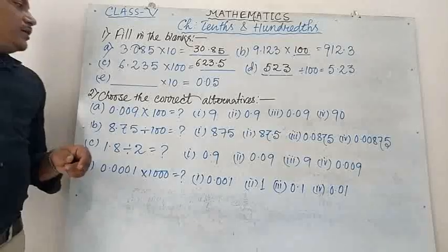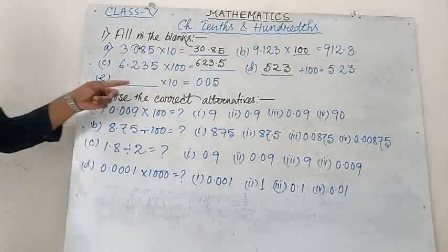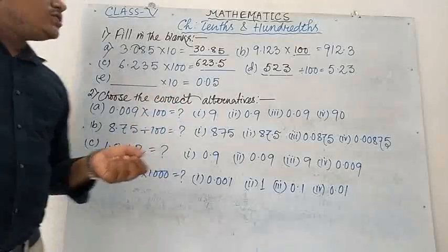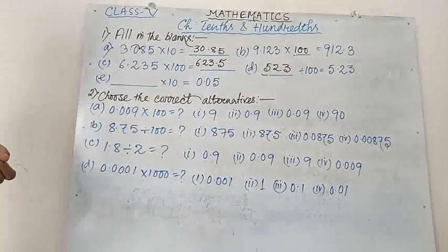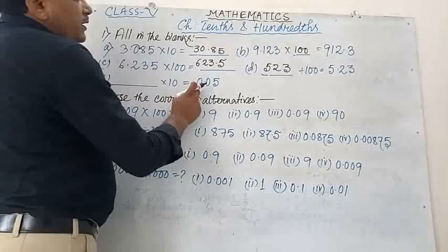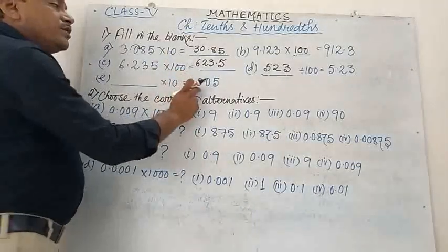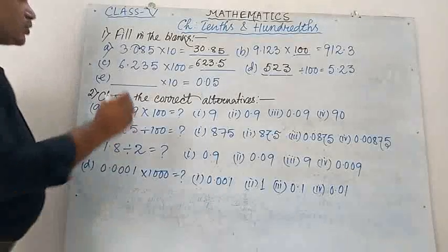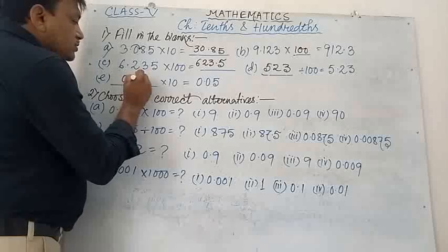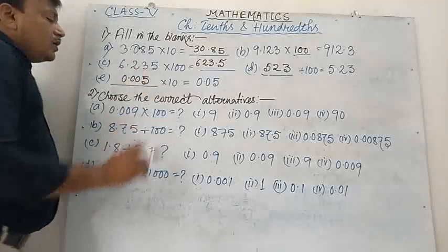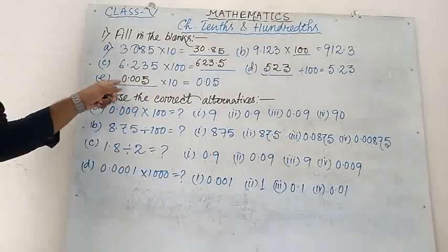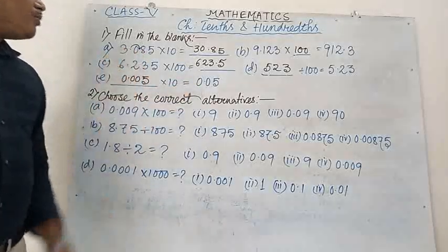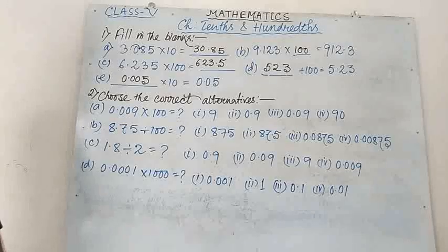Number E: dash multiplied by 10 equals to 0.05. After shifting one digit to the right, the result becomes 0.05. So what is the actual number? 0.005. If you multiply 0.005 by 10, you will get 0.05.